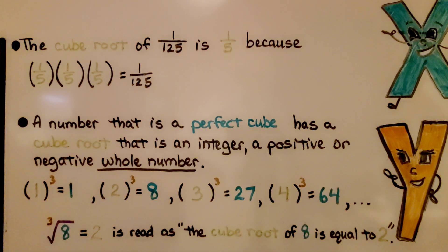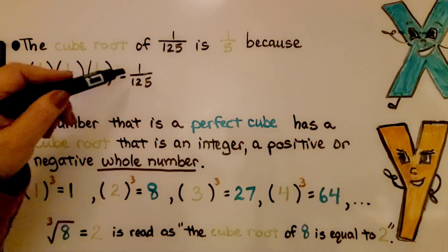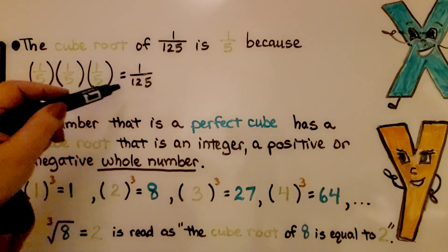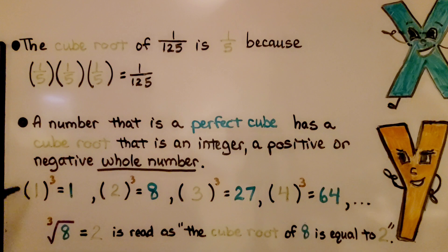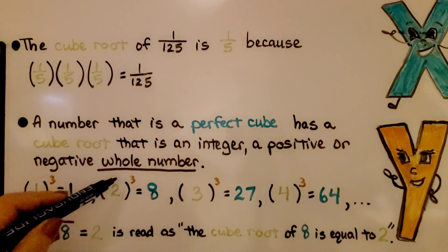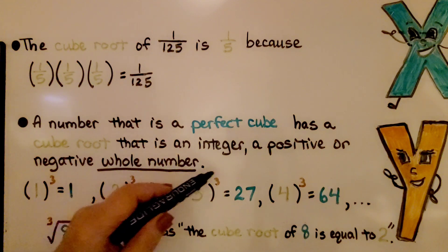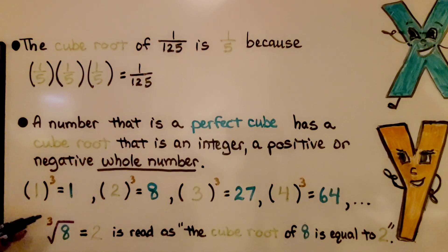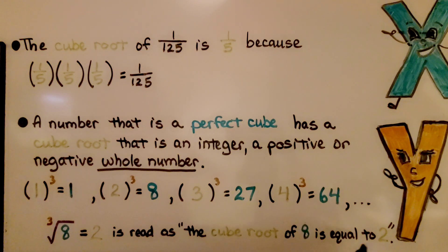The cube root of 1/125 is 1/5, because 1/5 times 1/5 times 1/5 equals 1/125. A number that is a perfect cube has a cube root that is an integer — a positive or negative whole number. So 1/125 is not a perfect cube since it's a fraction. Perfect cubes include: 1 cubed equals 1, 2 cubed equals 8, 3 cubed equals 27, 4 cubed equals 64, and so on. So 1, 8, 27, and 64 are perfect cubes. The cube root of 8 is equal to 2.